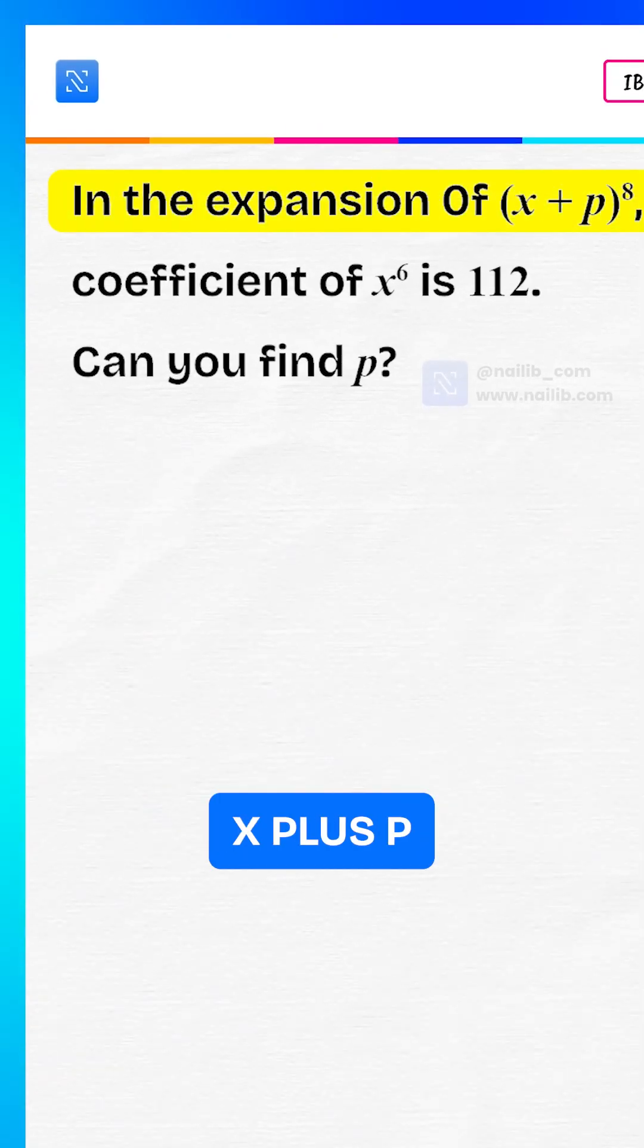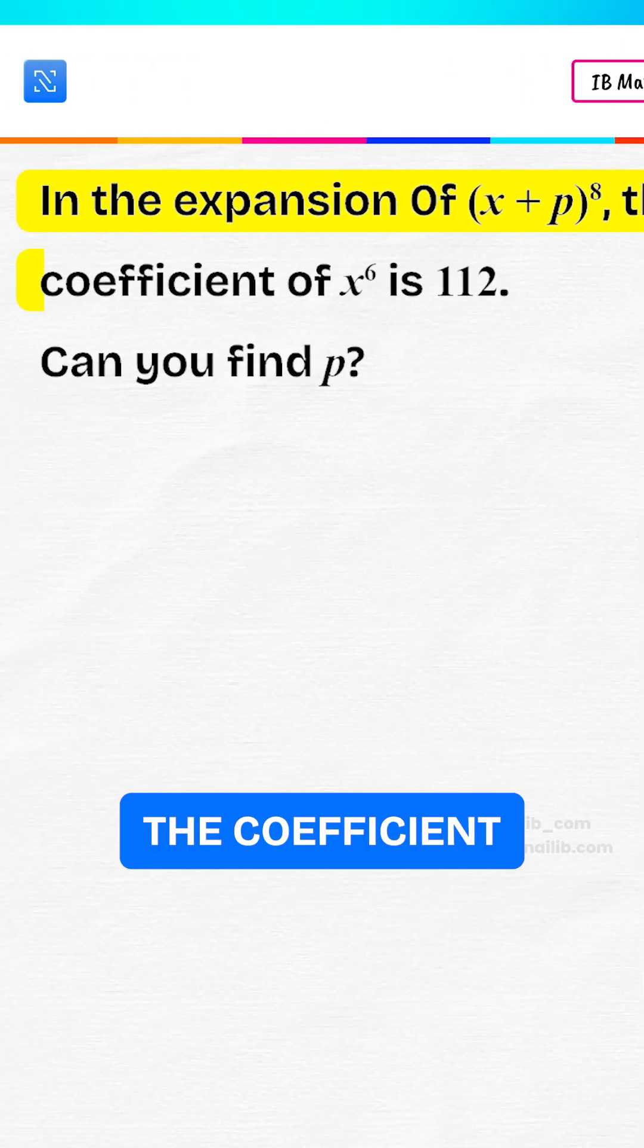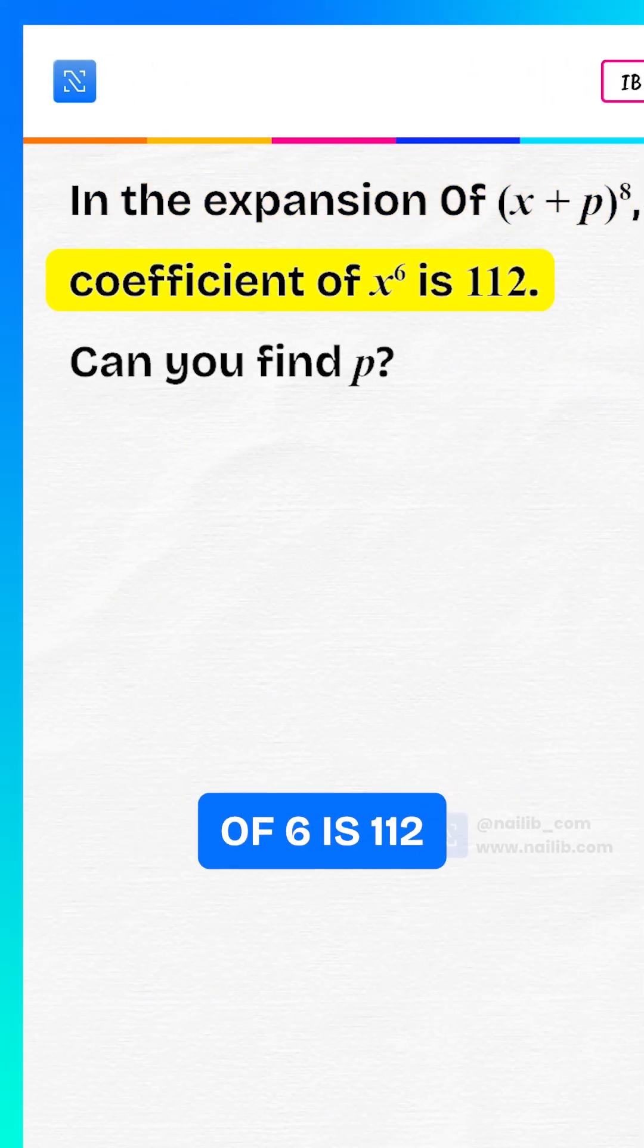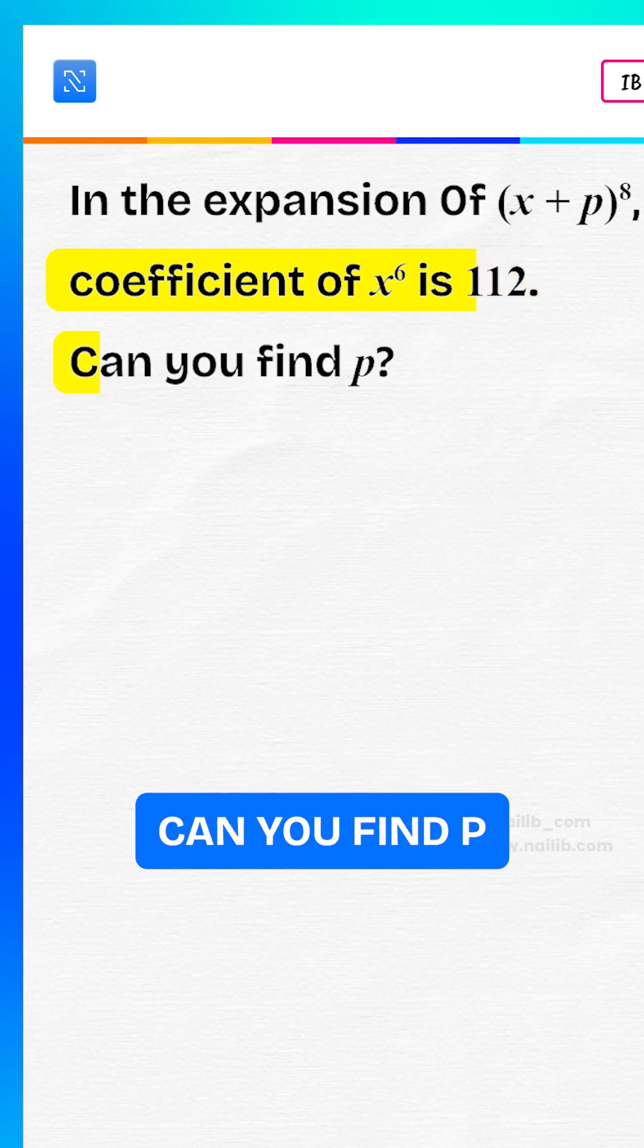In the expansion of x plus p to the power of 8, the coefficient of x to the power of 6 is 112. Can you find p?